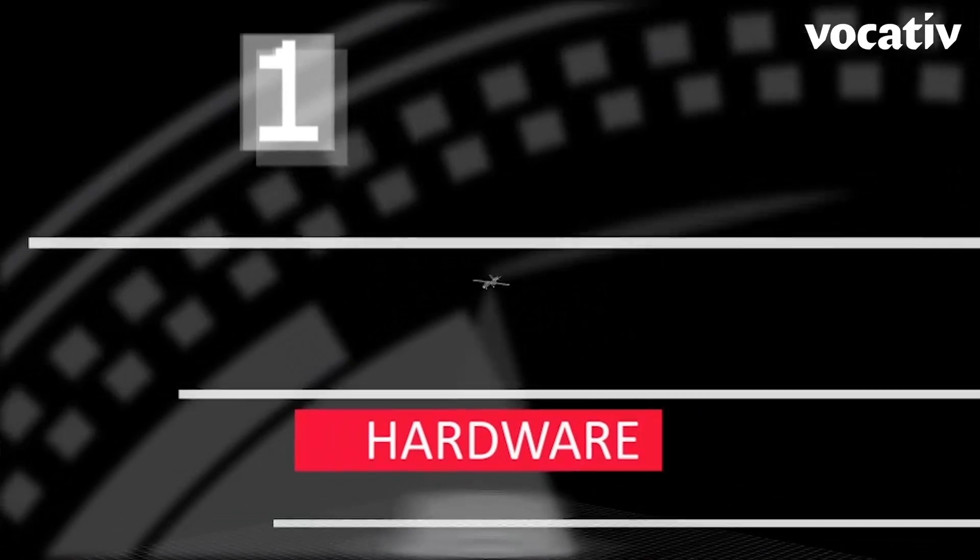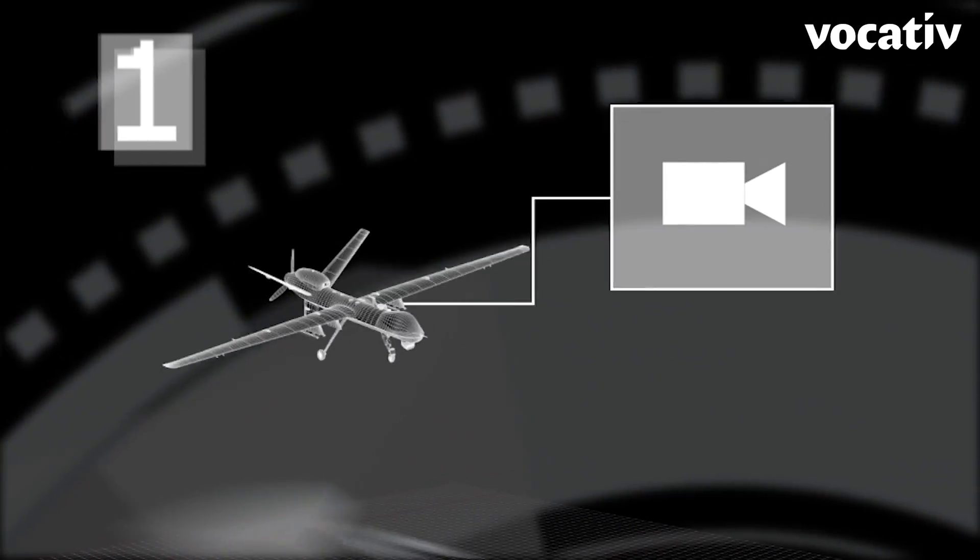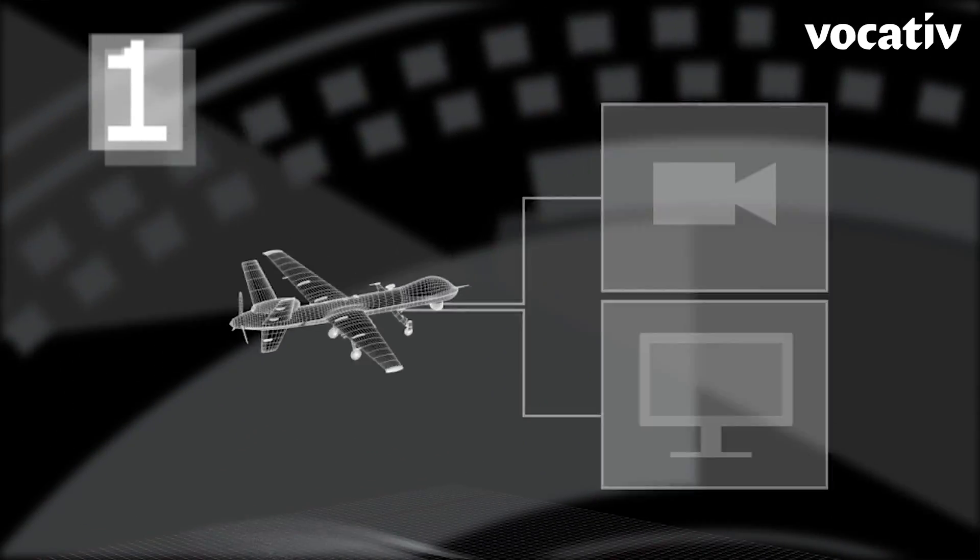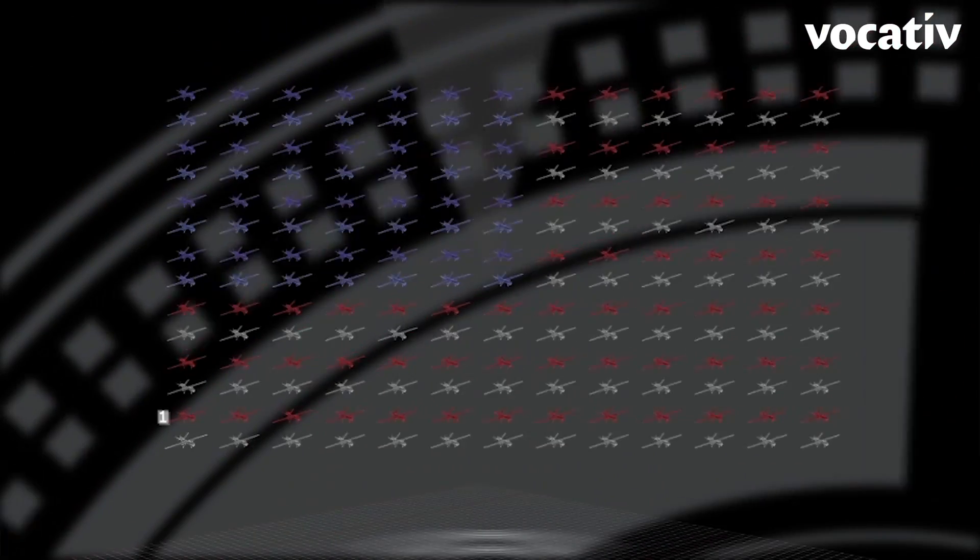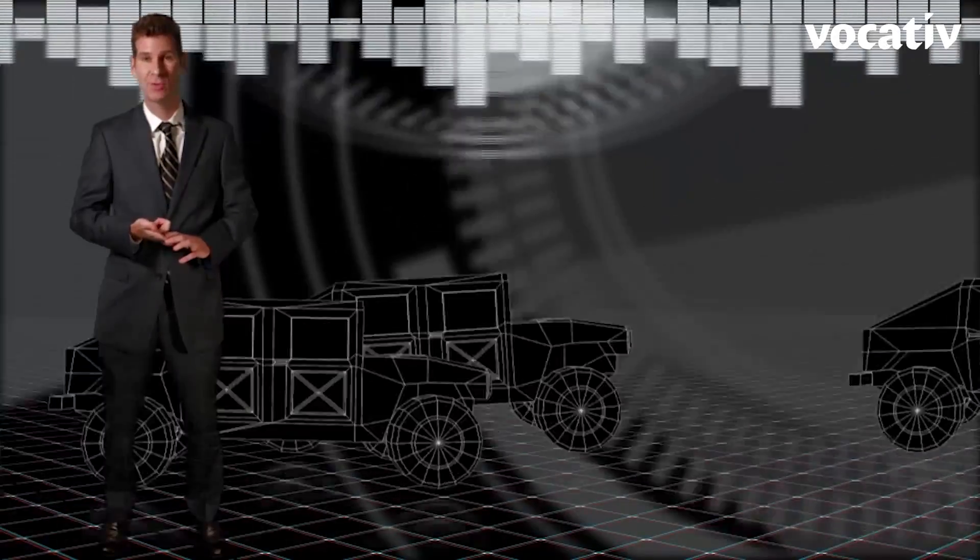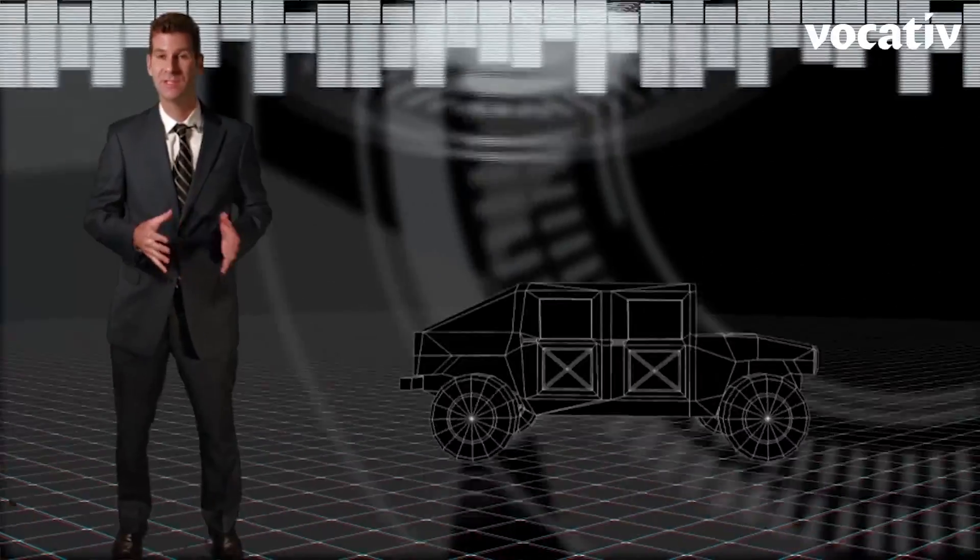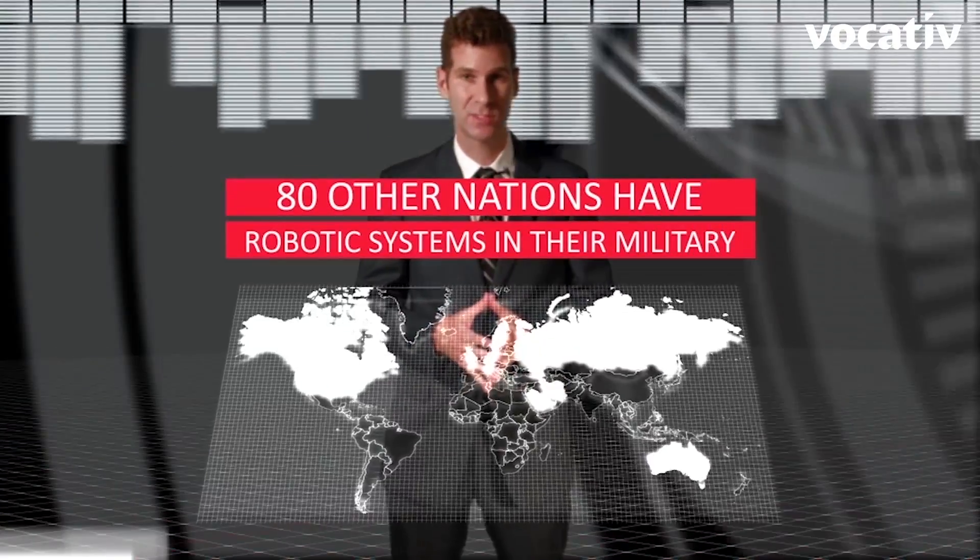The first is in hardware, where robots were once a thing of movies and TV shows, and now they're real. The US military, for example, has over 10,000 drones in the air, another 12,000 unmanned ground vehicles, and we're not the only player. At least 80 other nations have robotic systems in their military.